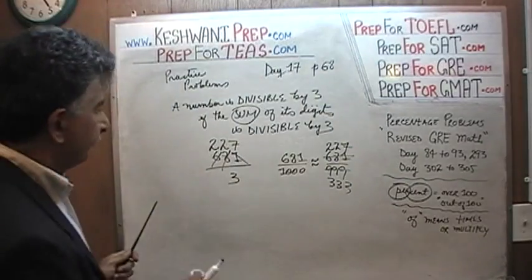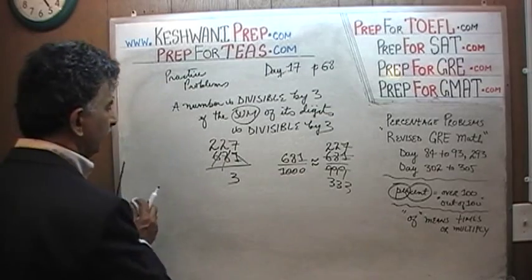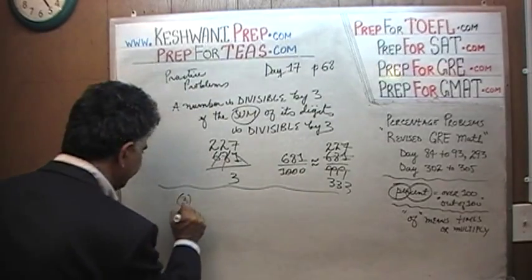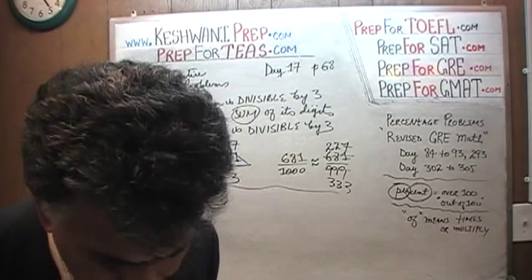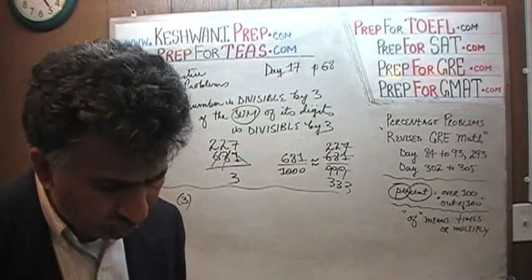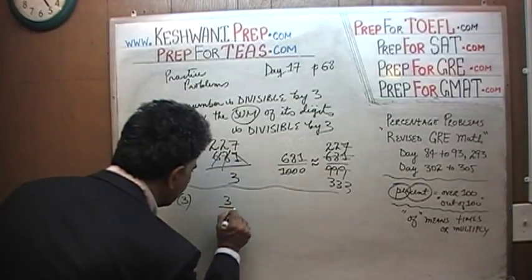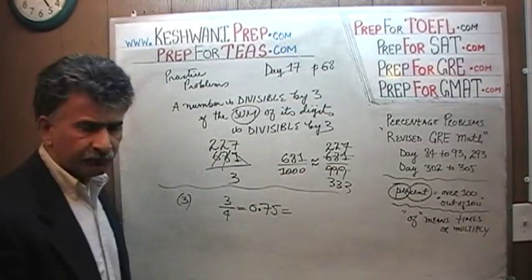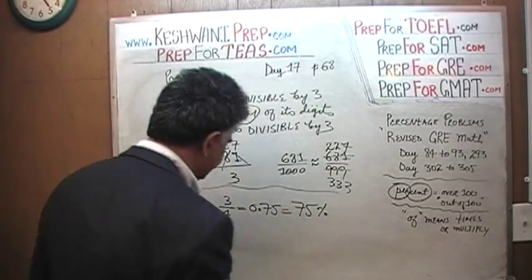Number three is just too silly. They're asking us to convert three-quarters into a percentage and a decimal. Three-quarters in decimal is just 0.75, and in percentage, of course, it's 75%. There's nothing to it.